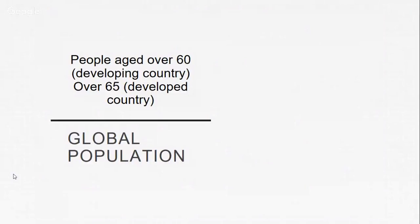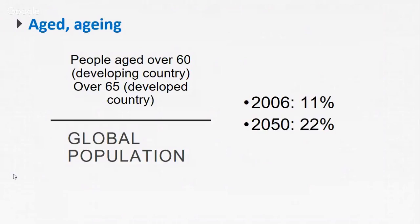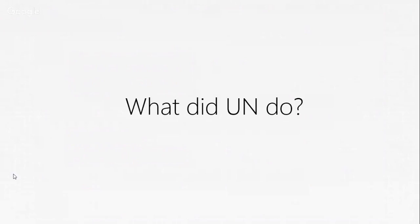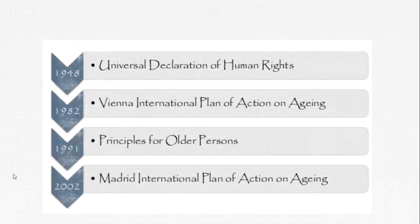According to the WHO, people are defined as aged if they are over 60 in developing countries or over 65 in developed countries. Looking at the statistics, in 2006 there were 11% of the global population defined as aged, but by 2050 almost a quarter of people will fall under this definition.